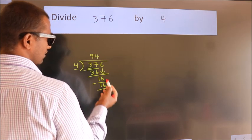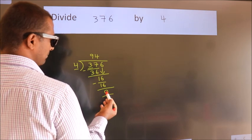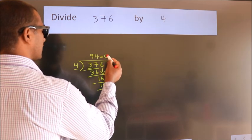After this, no more numbers to bring down. And we got remainder 0. So, this is our quotient.